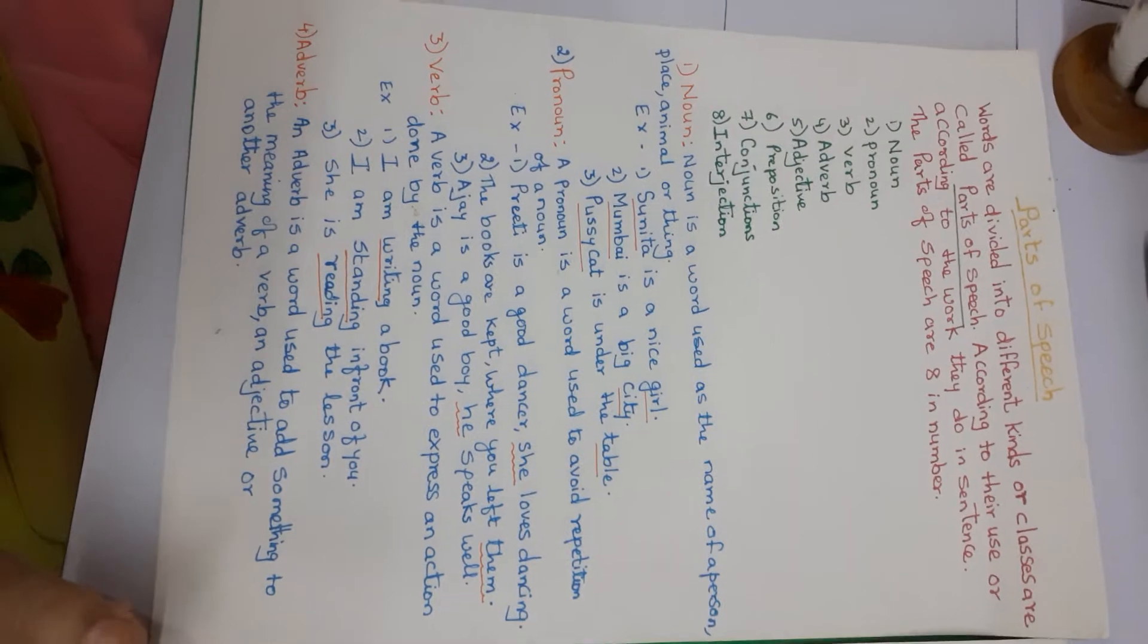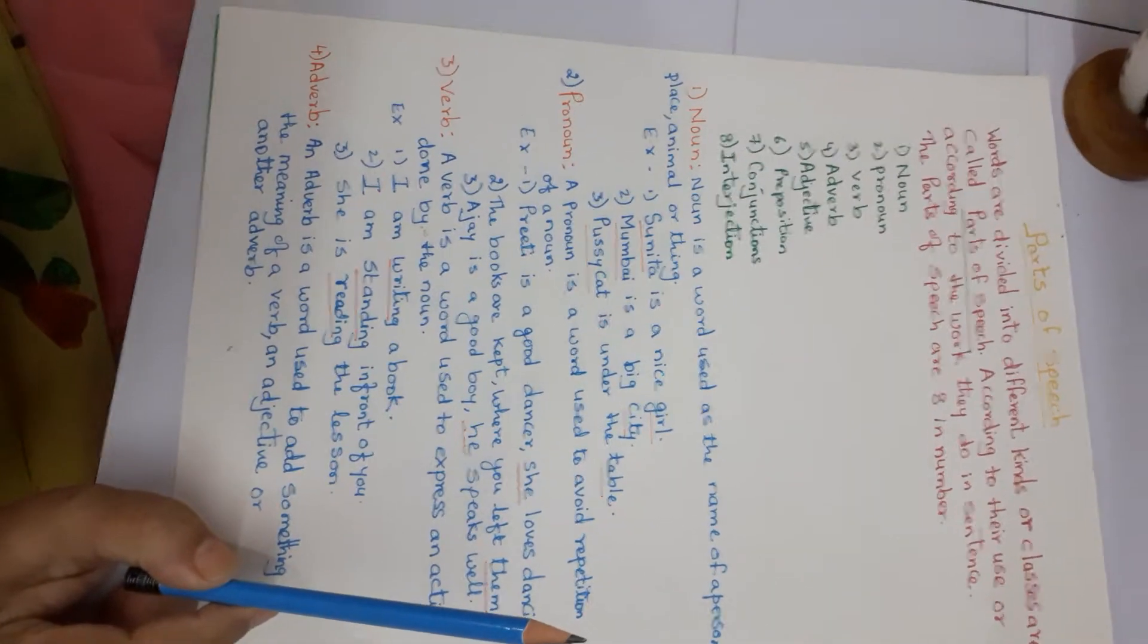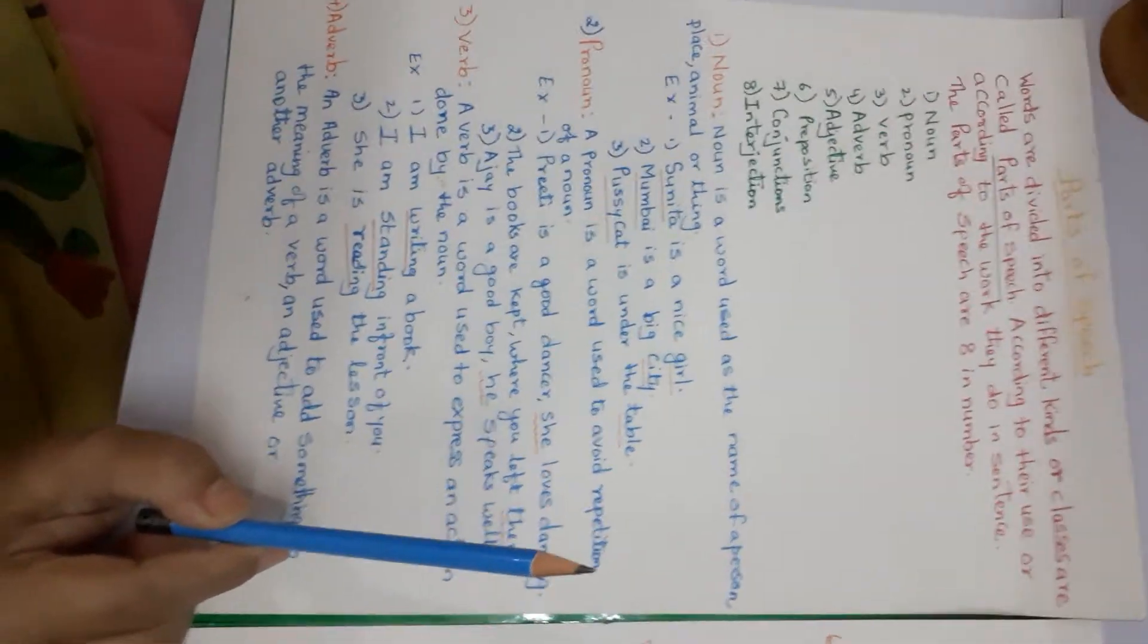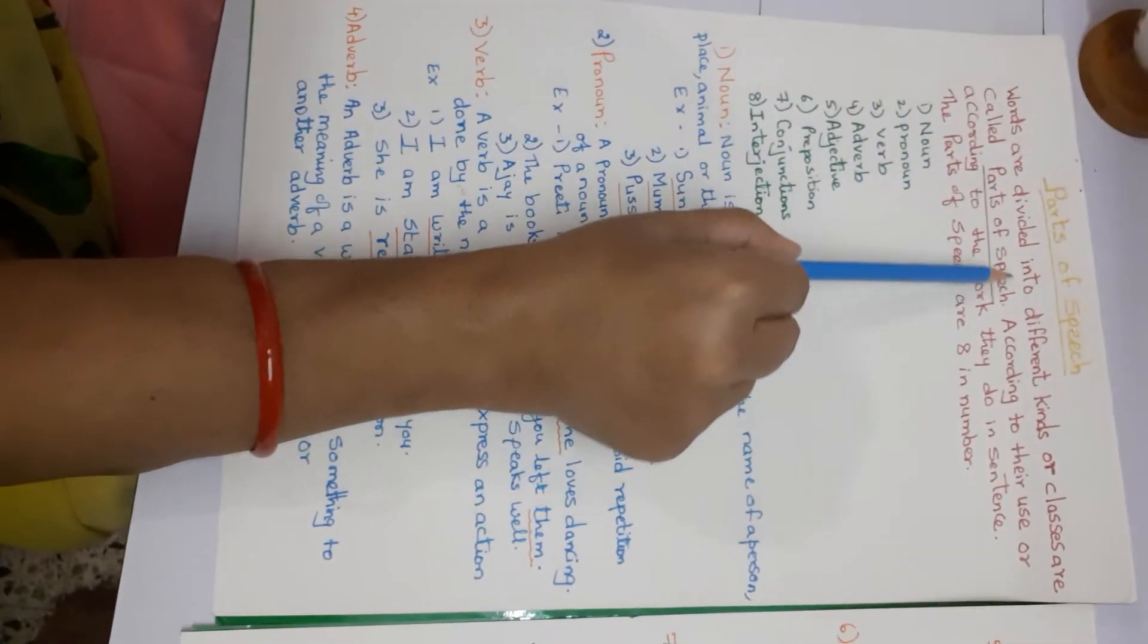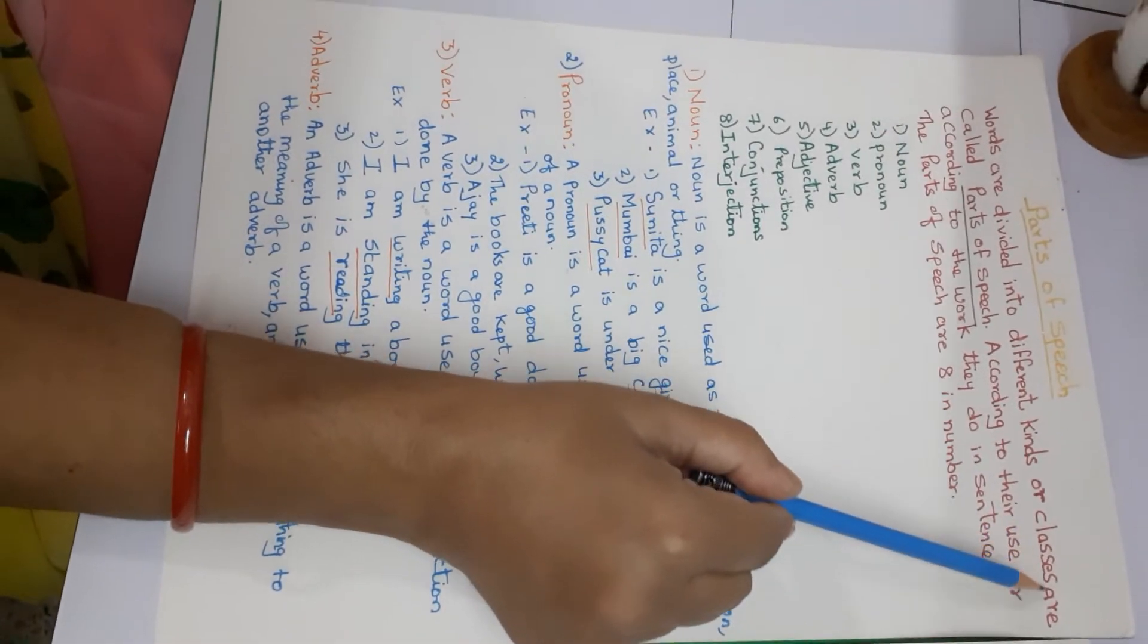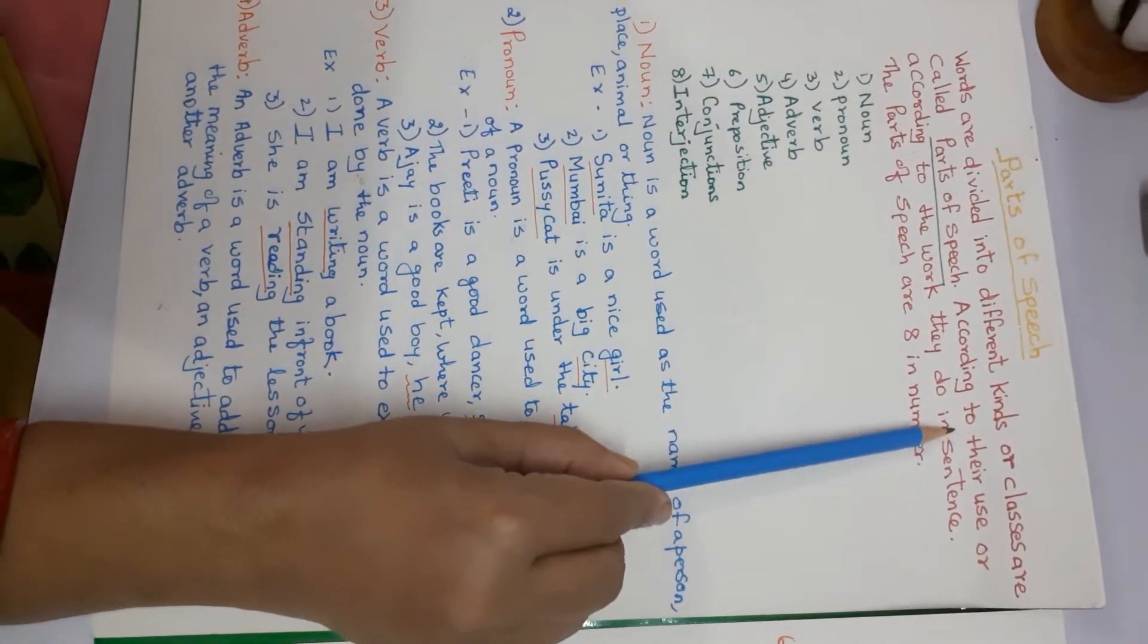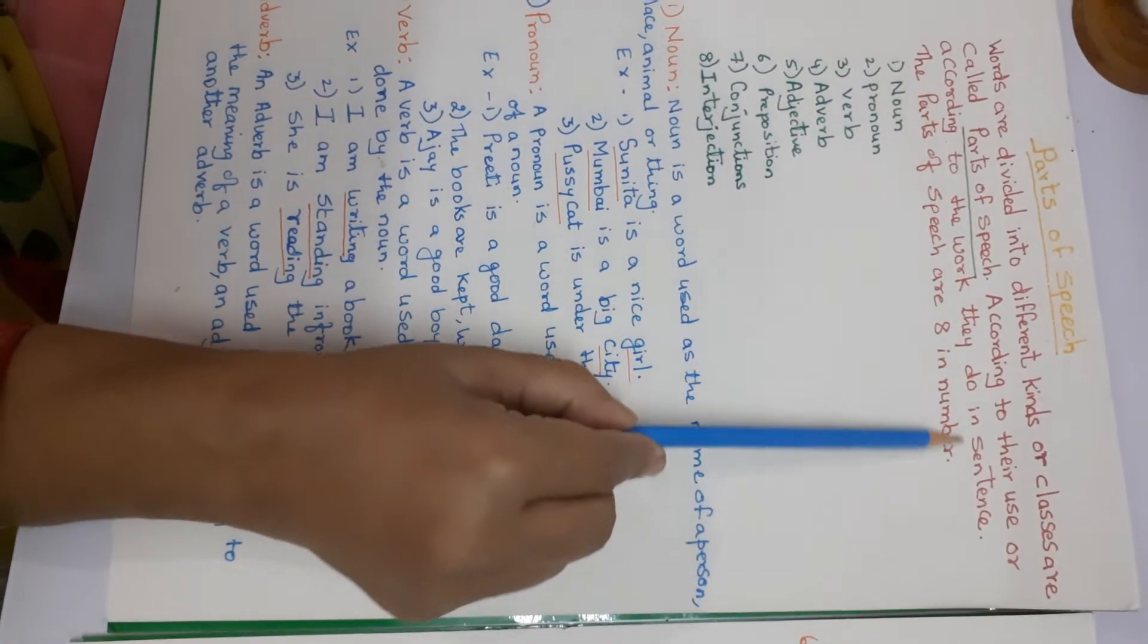Sentences include different kinds of words. The words are classified according to the job they perform in that sentence. These parts are called parts of speech. Words are divided into different kinds of classes called parts of speech, according to the work they do in a sentence.